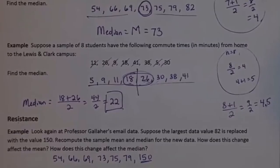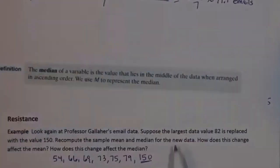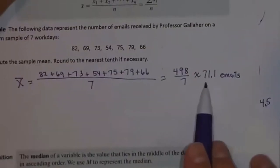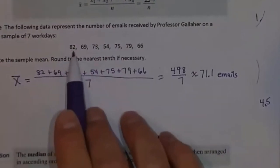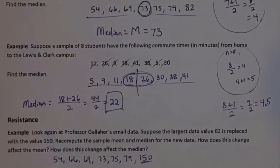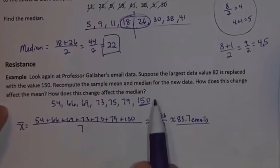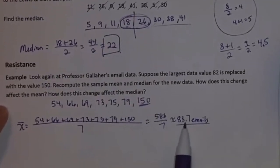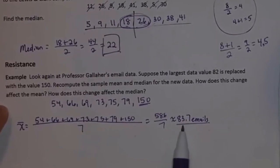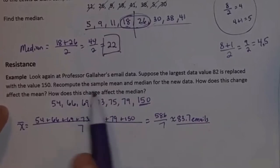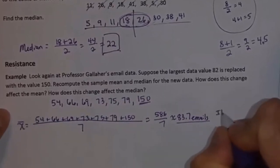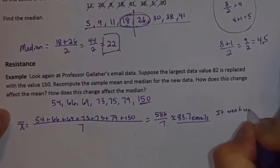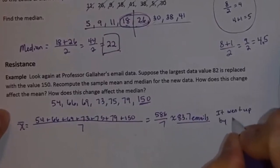How does this change affect the mean? Our mean when calculated before was 71.1. If that one data value, 82, is changed to a much larger value of 150, our mean increased from 71.1 to 83.7 — it went up by more than 10.